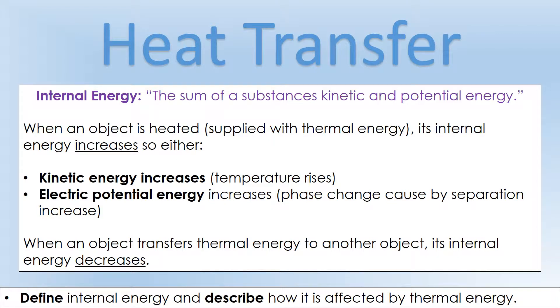When we supply thermal energy to something, its internal energy increases. This could happen in two ways: we can increase the kinetic energy, which means its temperature would rise, or we could increase its electric potential energy, which means we've got a phase change happening. When an object is cooling down, it's transferring thermal energy to another object and its internal energy is decreasing.